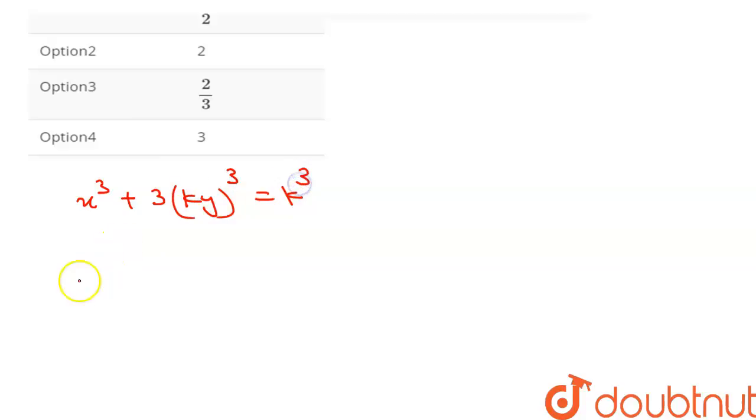So from here we can write this as x cube plus 3 k cube y cube equal to k cube.